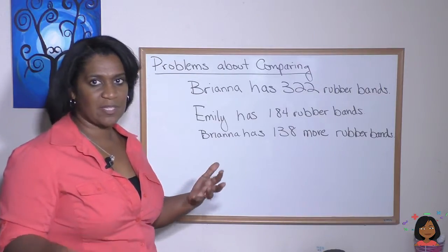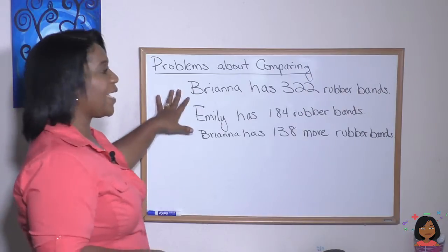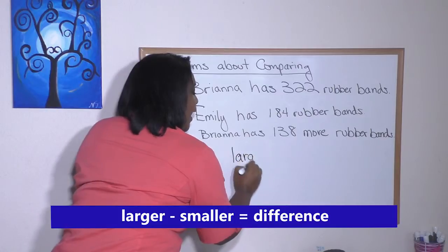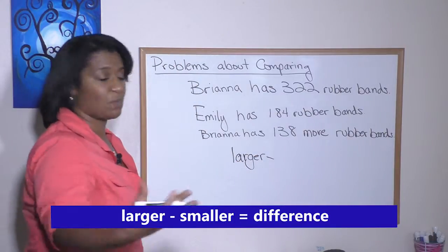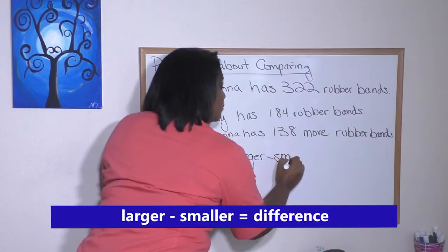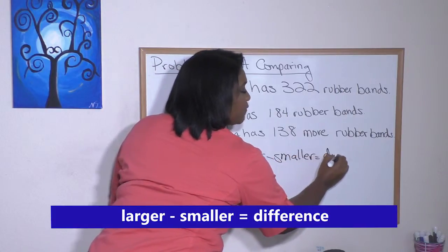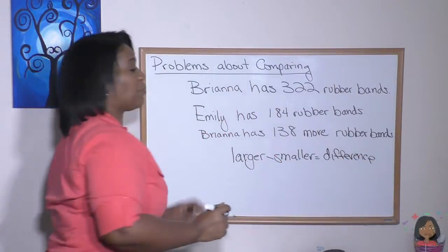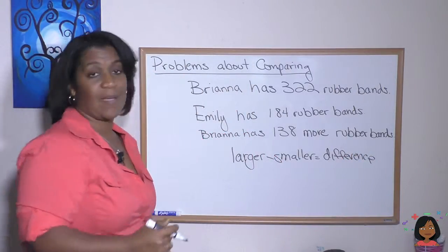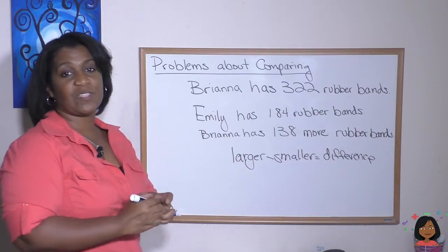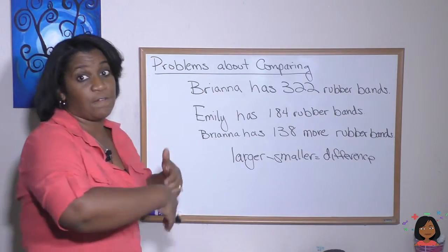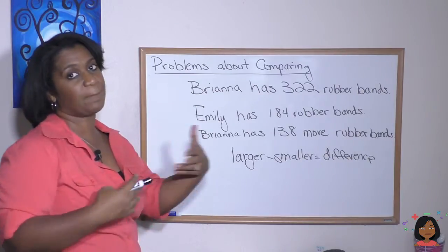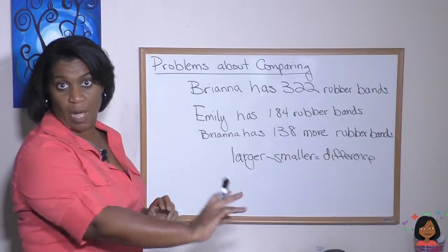What kind of problem is this? Let's think about it. Brianna has a certain amount, it's a larger number. So we say larger. And Emily has a certain amount, but it's a smaller number, and really what we're looking to do is to find out the difference between the two. Now I told you that Brianna has 138 more rubber bands. I also could have given you this answer saying that Emily has so many fewer rubber bands. It doesn't matter. They're both still problems about comparing because you're comparing a larger number to a smaller number.